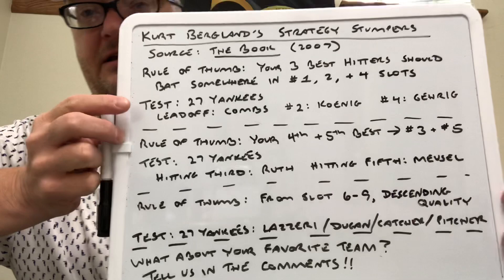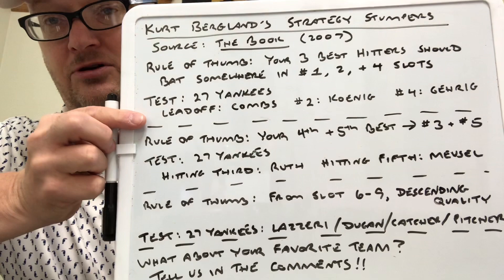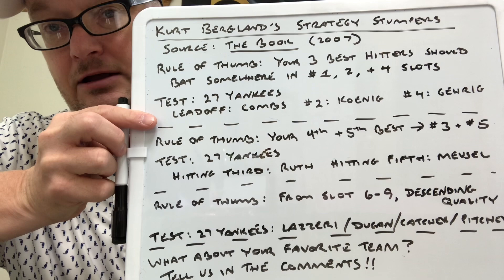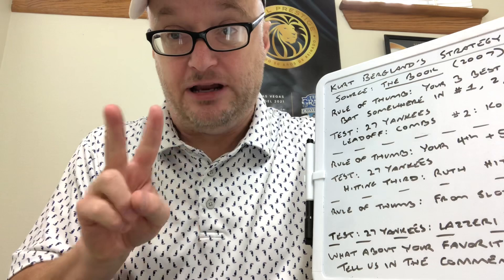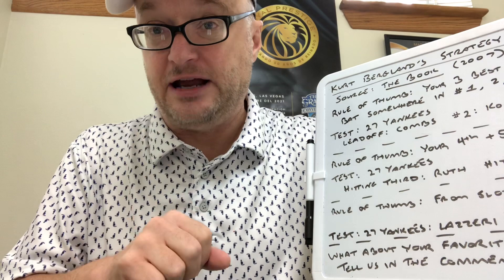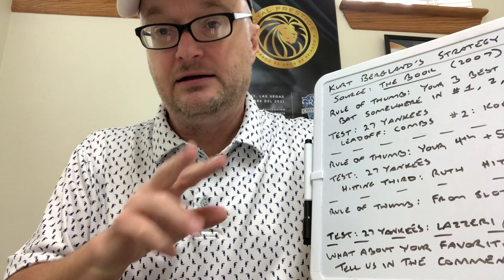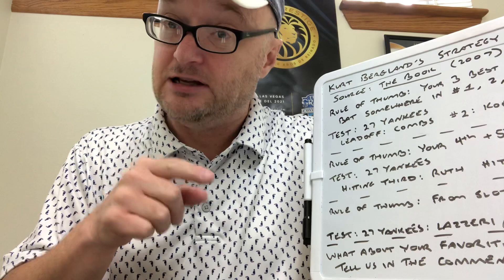So if we look at the 1927 Yankees as our test case, the hitters in those spots were Earl Combs at center field batting first, Mark Koenig the shortstop batting second, and Lou Gehrig batting fourth. You can see that Miller Huggins was clearly not applying these concepts, because Koenig might have been the worst hitter on the field at that time yet he was hitting in the number two slot. Gehrig and Ruth were the centerpieces of the offense, and Ruth is nowhere to be found in slots one, two, or four.